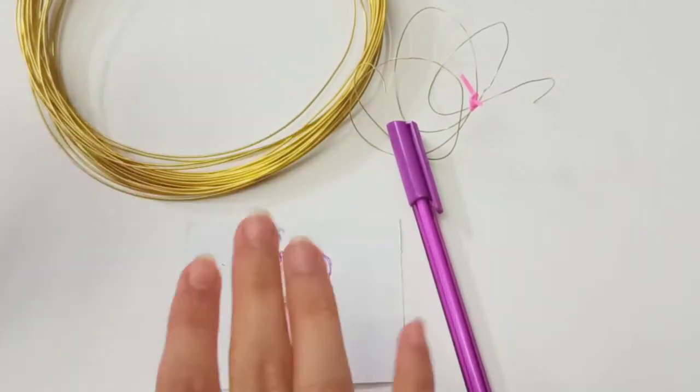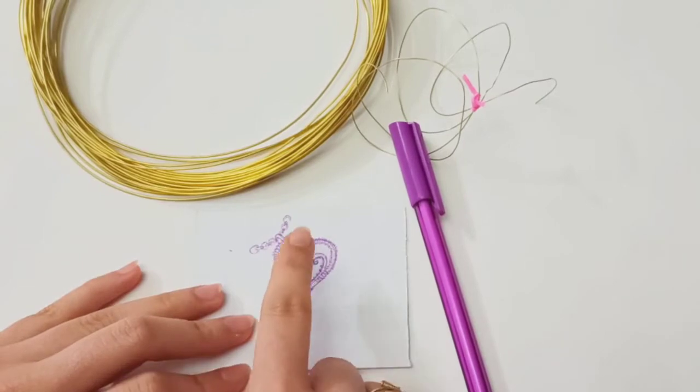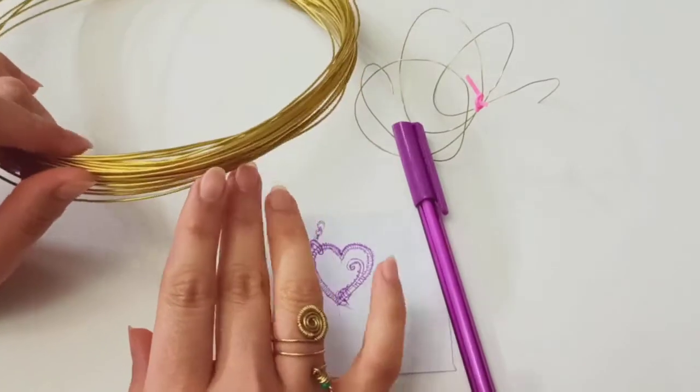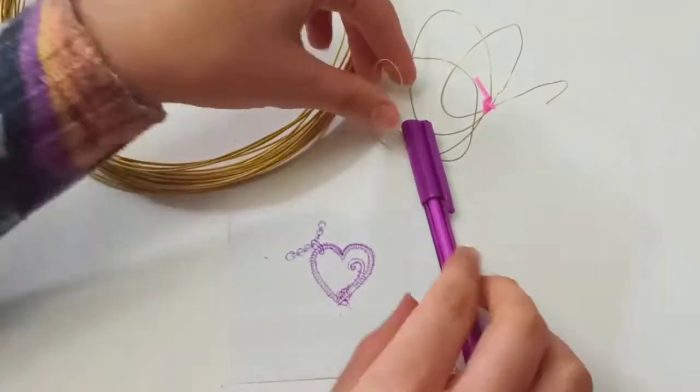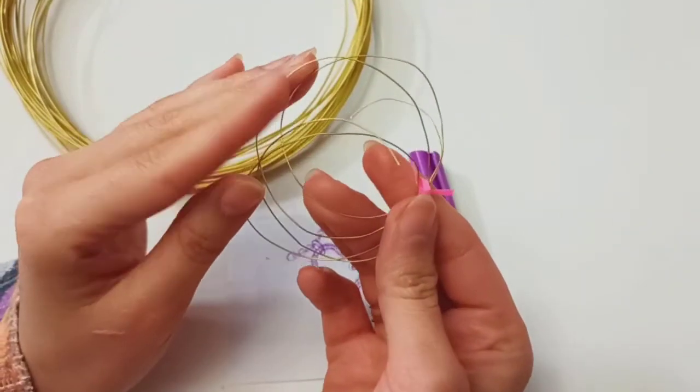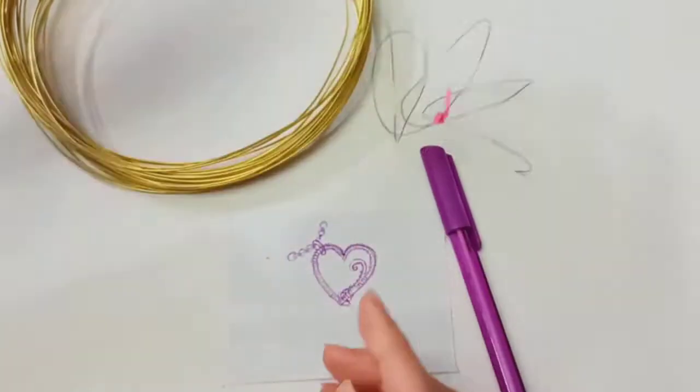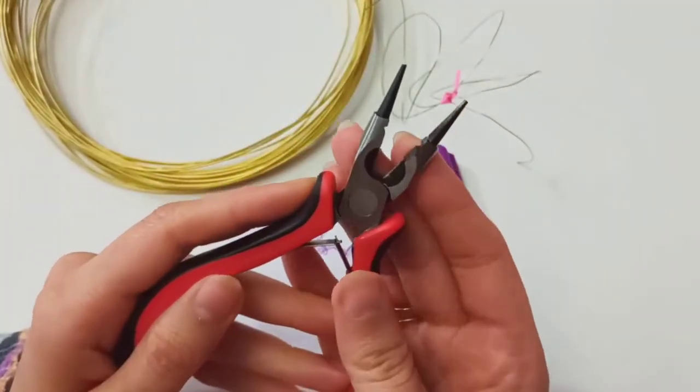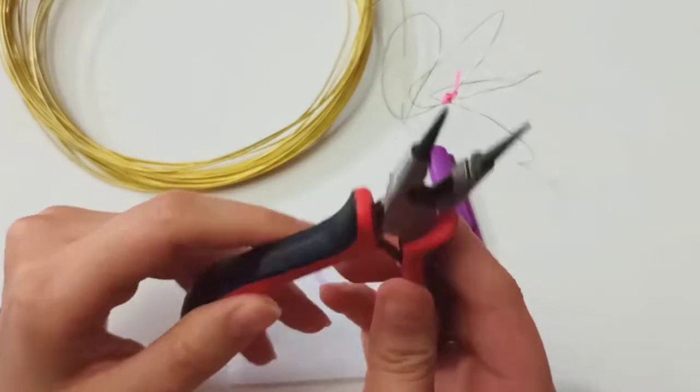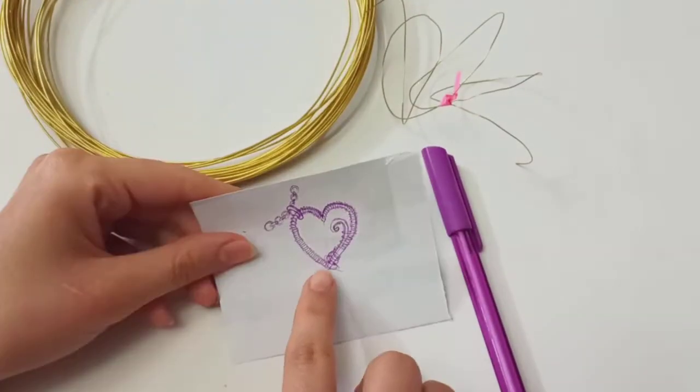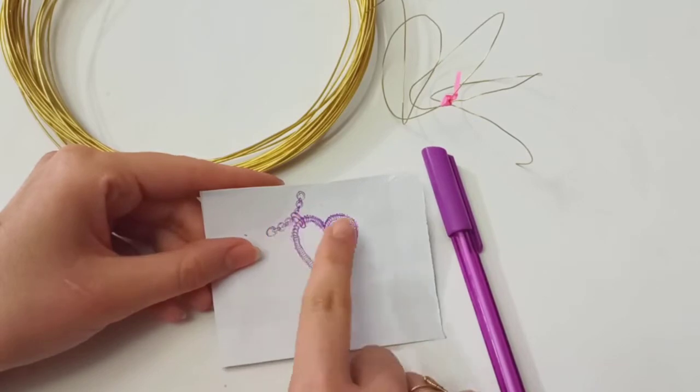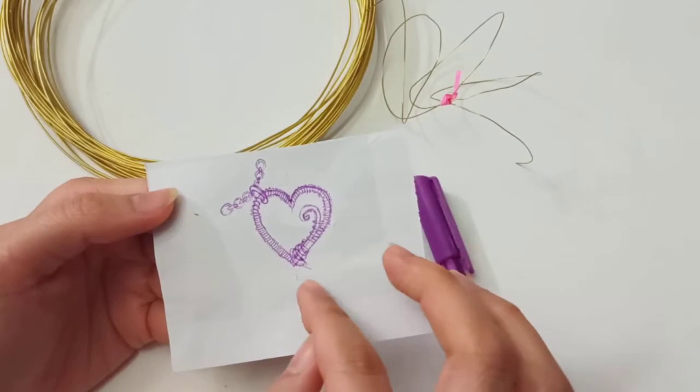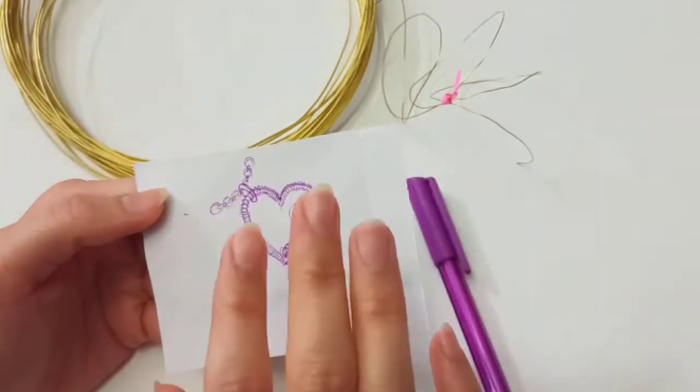For making this heart wire pendant, you just need a one millimeter wire, 0.4 or 0.5 wire, and also your main tools: round nose pliers, chain nose pliers, and wire cutters. I have drawn the design that I have in mind on a piece of paper so that it would be clear what to do, and it helps a lot to start.